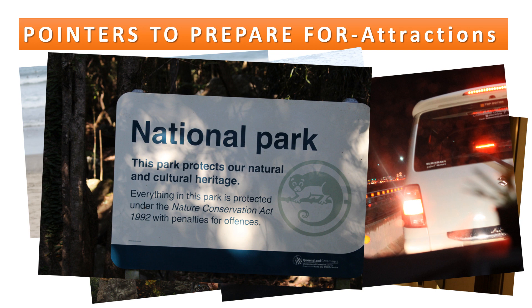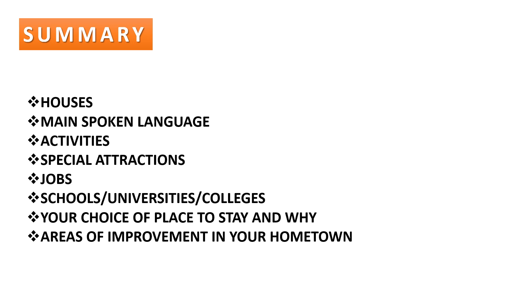For a quick summary of pointers: talk about what kind of houses are there — concrete houses, thatched roofs, mud houses, or brick houses. Mention the main language spoken — Chinese, Tamil, English, French, or whatever it is — and whether it is easy to communicate or whether people understand English. Also talk about the different activities people do, both indoor and outdoor, and what the favorite spot is.